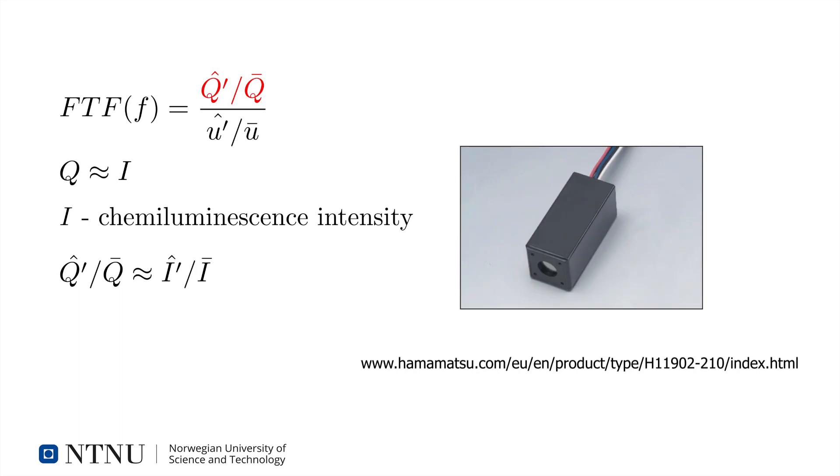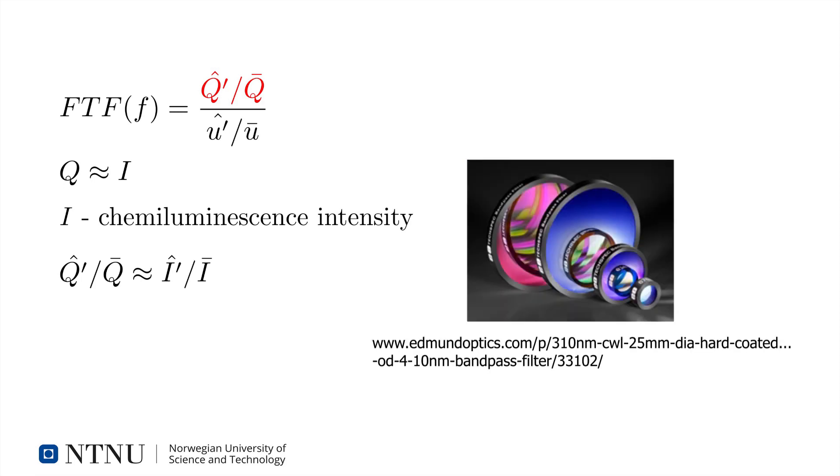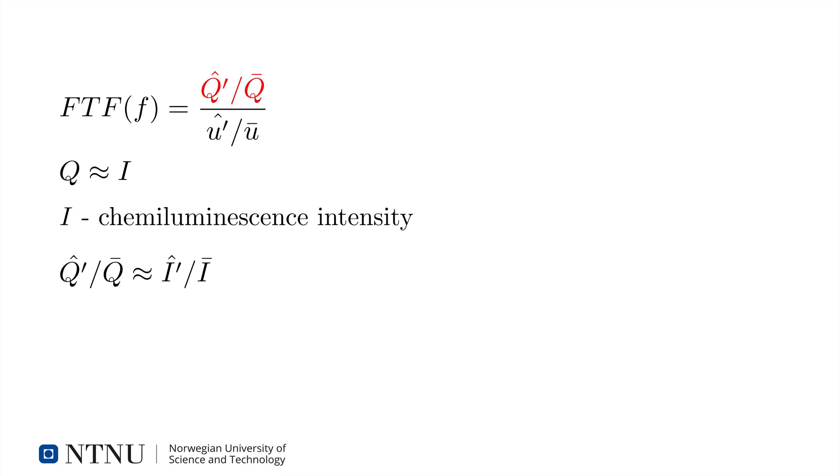We use a Hamamatsu photomultiplier tube to measure the light emitted from the flame. An Edmund Optics bandpass filter is used that has a center wavelength of 310 nanometers and a full width at half maximum of 10 nanometers. It is important to check the linearity of the photomultiplier response, or to correct for non-linearity. A simple check is to increase the flow rates of fuel and air while keeping the fuel to air ratio constant. The photomultiplier response should increase proportionally.